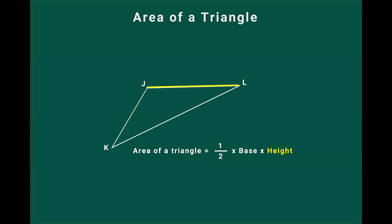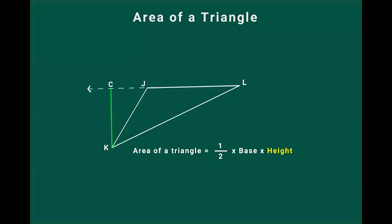If you take JL as base, then our third vertex will be K. We cannot draw a line from point K which will be perpendicular to JL. So we have to extend JL. If we extend JL along L, we still cannot draw a perpendicular from point K. So we extend JL along J. If we extend JL along J, we get a line which is perpendicular to JL extended, and we shall name this line KC. So the area of the triangle will be half into JL, which is the base, into KC, which is the height of the triangle when JL is taken as base.